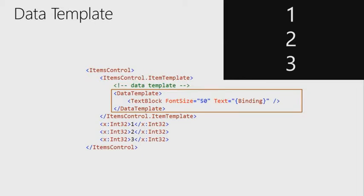Here's a data template used inside an items control. Data templates can also be used inside content controls. It doesn't have to be a repeater. You can do anything you want, and the binding data context is isolated to the individual item. One of the interesting things here is it's also showing XAML extensions — the ability to instantiate value types. We're actually creating value types by virtue of that extension, using x:Int32 to declare items one, two, and three, and the repeater is just taking those items and repeating them.